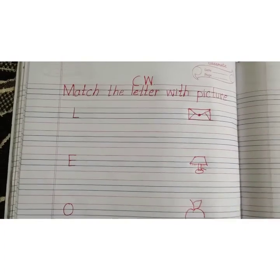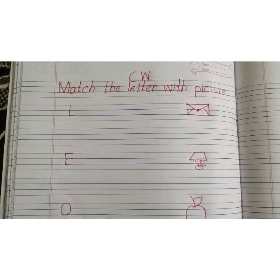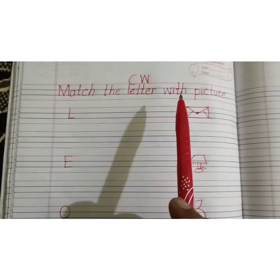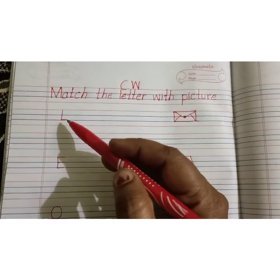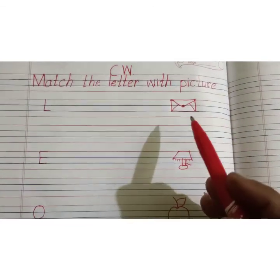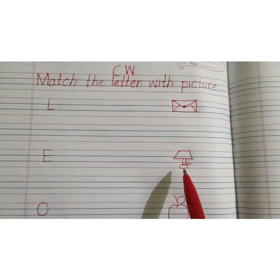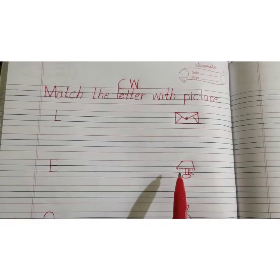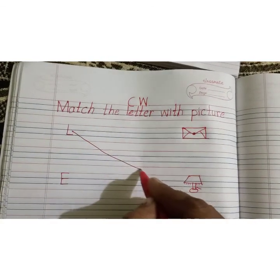Stay safe. Good morning, students. How are you all? I think you all are fine and safe. Today's activity is: Match the letter with the picture. Which letter is this? L says la. What is this? Envelope. What is this? Lamp. So, la — lamp. L says la, lamp. To match this with lamp. Okay.